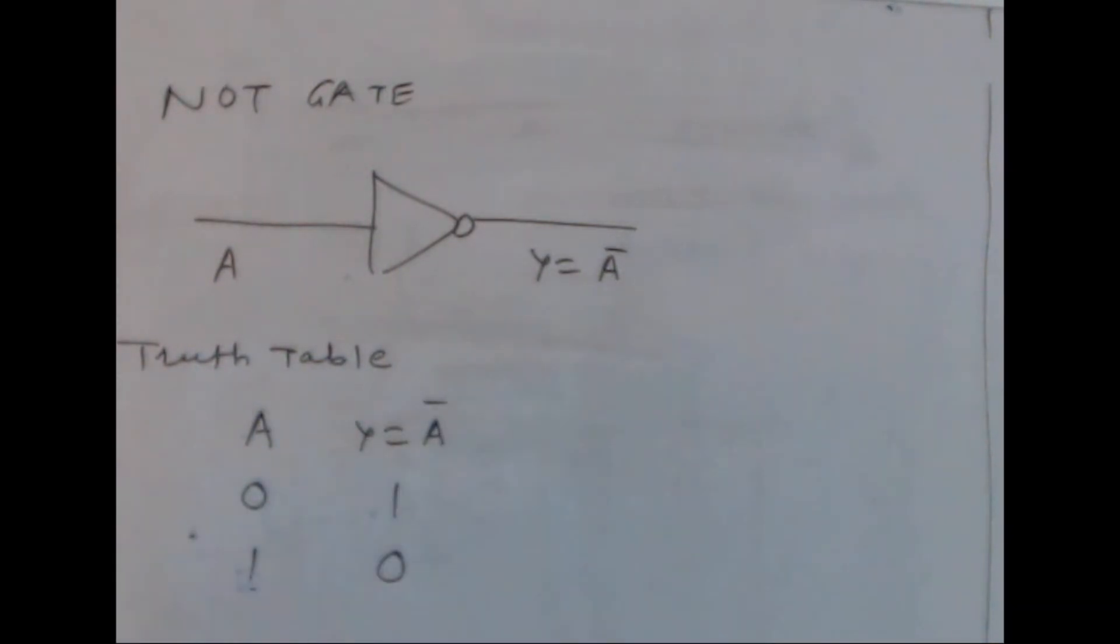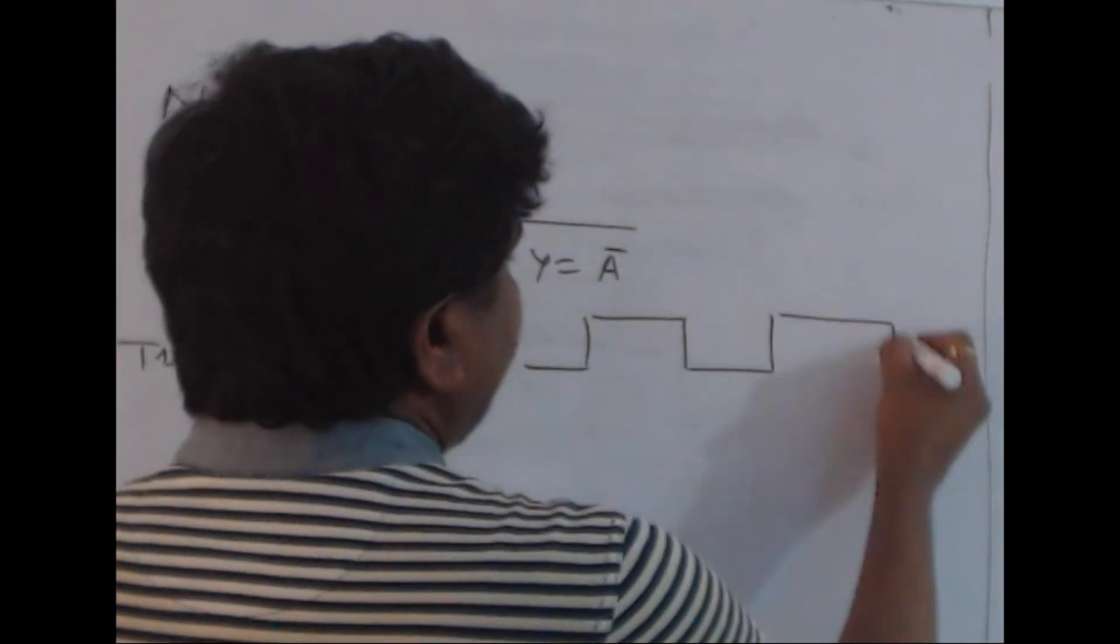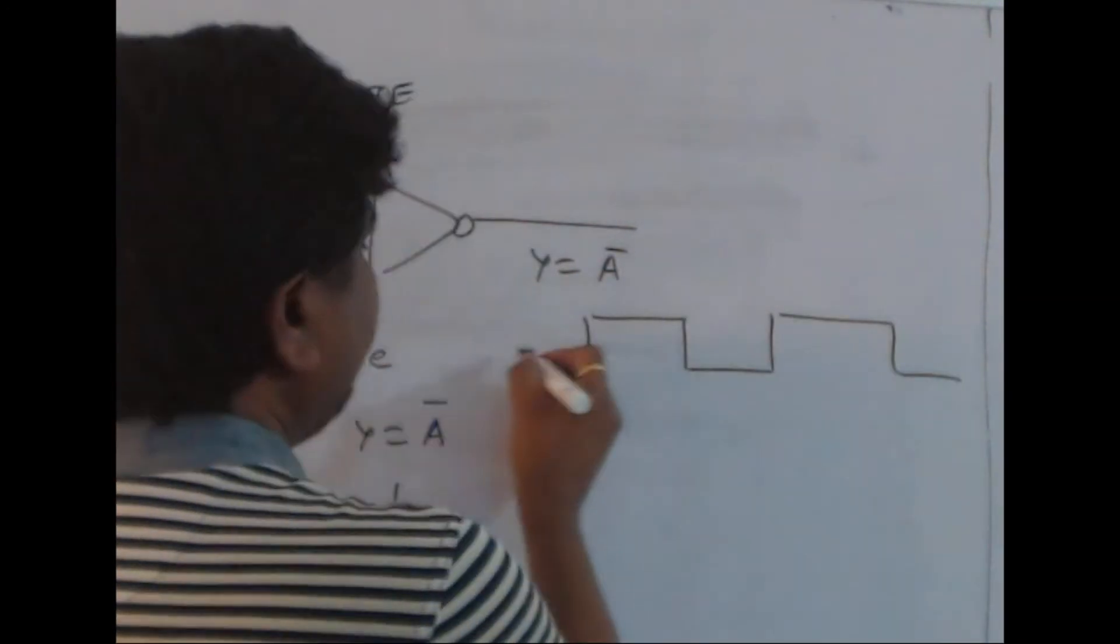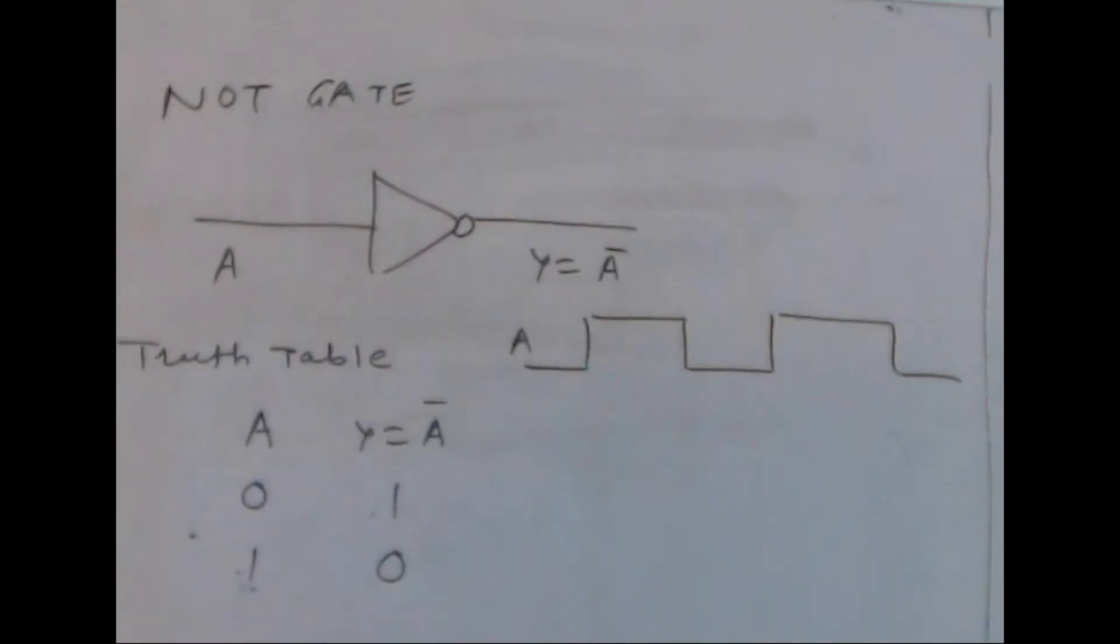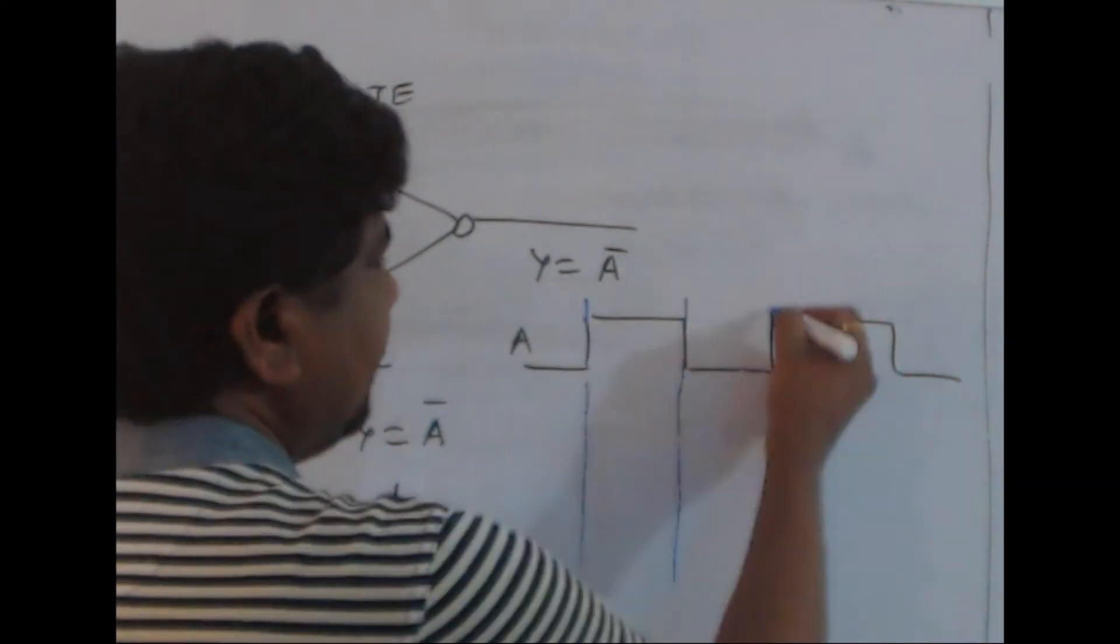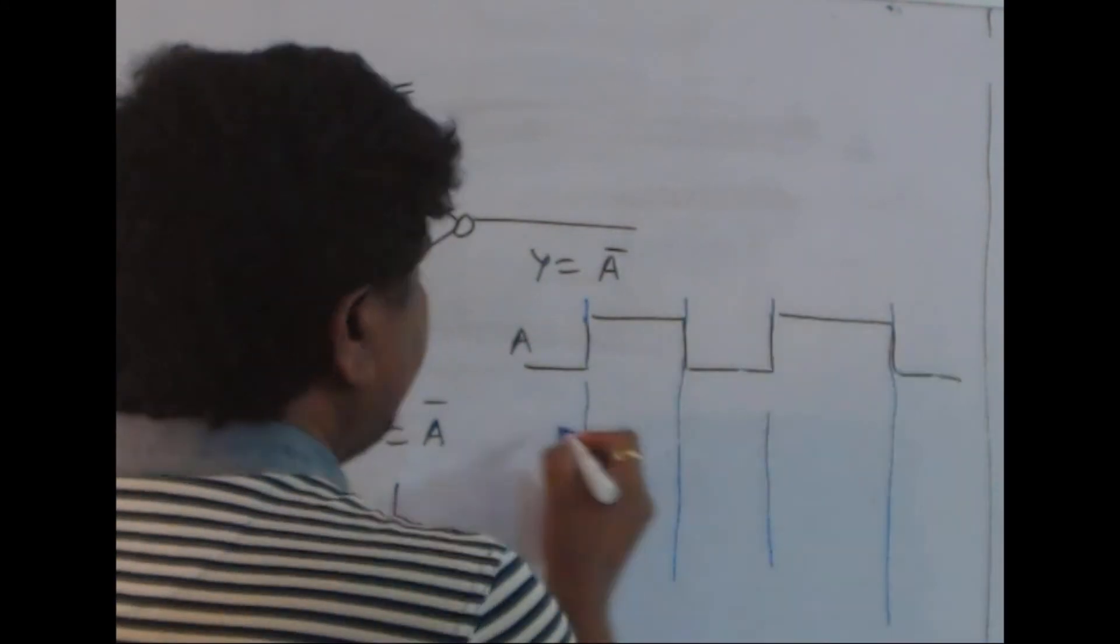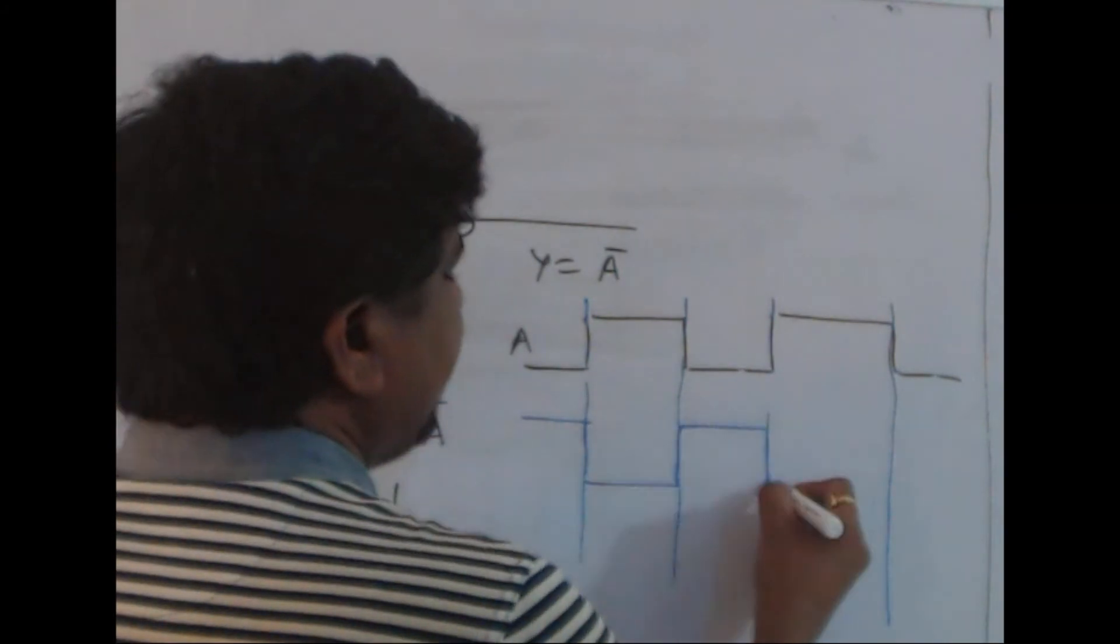In the form of a waveform, I have some waveform where A is given. What is equivalent Y without delays? Practically it is not possible to have no delay, but without delays we can get output exactly 180 degrees out of phase with the input.